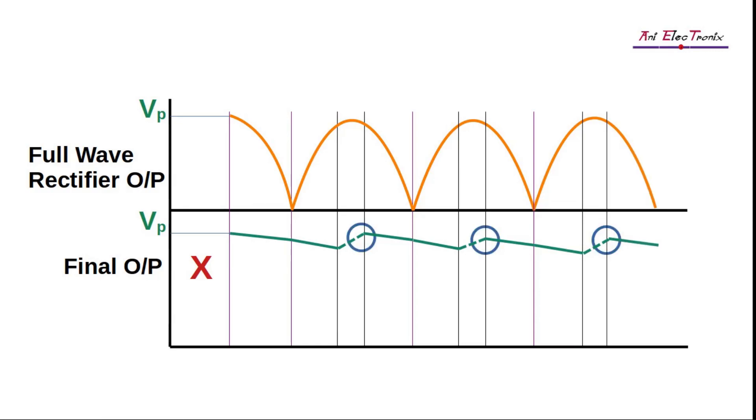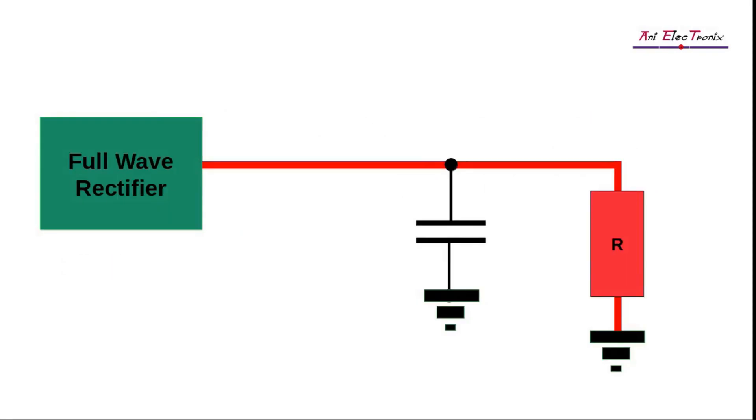The estimated peak-to-peak ripple out of any capacitor filter is VR = I/(FC). This type of filter is called the capacitor input filter.